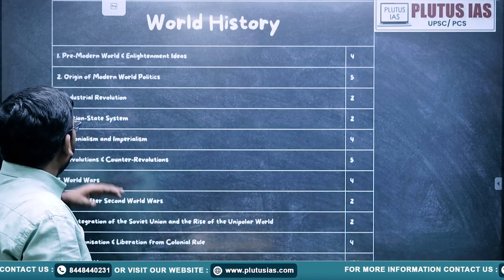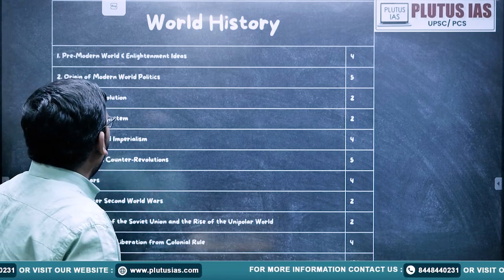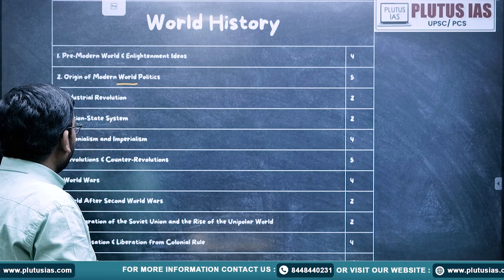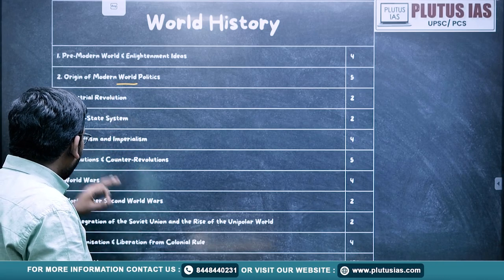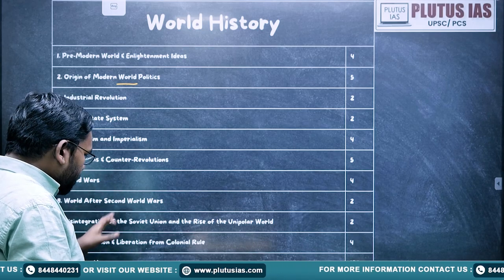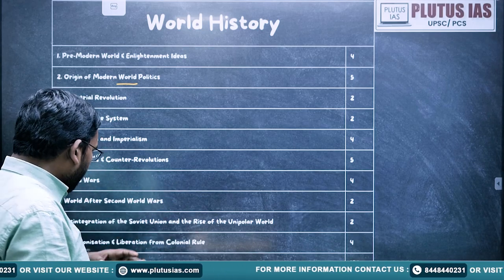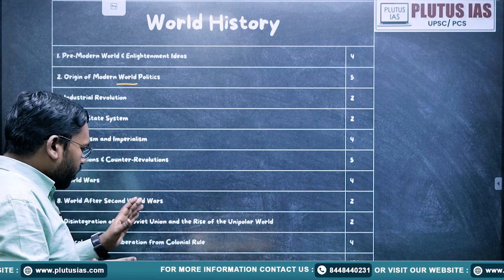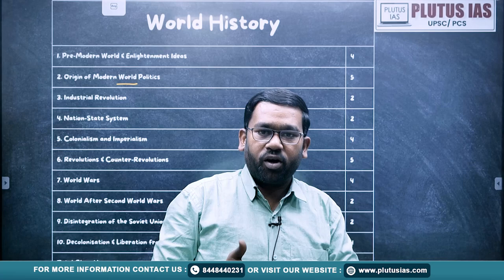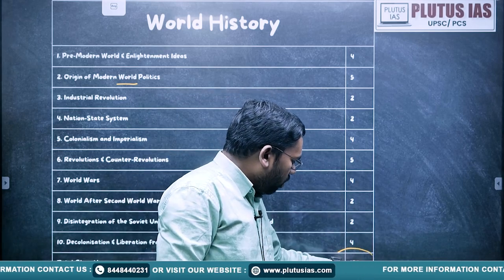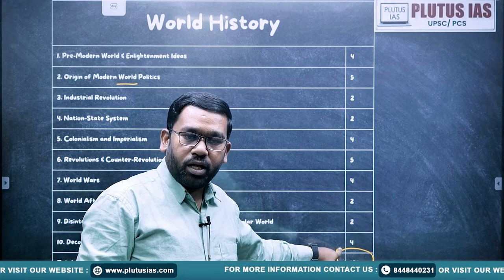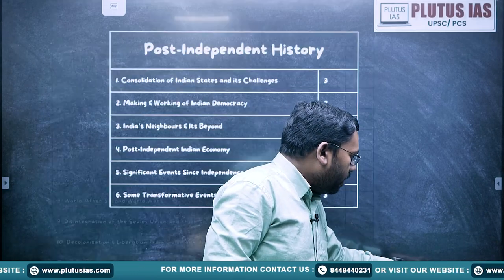Then we have World History, which has a total of 10 chapters: The Pre-Modern World and Enlightenment Ideas, Origin of Modern World Politics, Industrial Revolution, National State System, Colonialism and Imperialism, Revolutions and Counter-Revolutions, World Wars, World after World War, Disintegration of Soviet Union and the Rise of a Unipolar World, and lastly Colonization and Liberation from Colonial Rule. All these chapters from Ancient, Medieval, Modern, and World History will be completed in 180 hours.